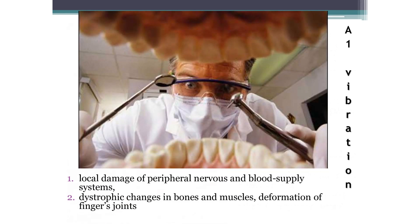Vibration, like ultrasound, damages the peripheral nervous system and circulatory system. Under the influence of vibration, dystrophic changes occur in bones and muscles, and joints are deformed. Dentists most often encounter vibration in their work. Preventive measures are the same as for ultrasound: gloves, breaks during work, massage, and hot water.